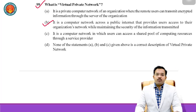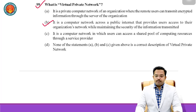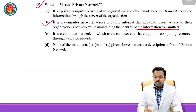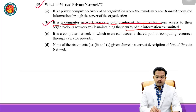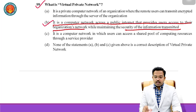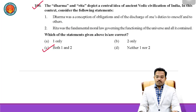Question 99: What is a virtual private network (VPN)? It is a computer network across the public internet that provides users access to their organization's network while maintaining the security of information transmitted. This is a straightforward question with a direct answer.